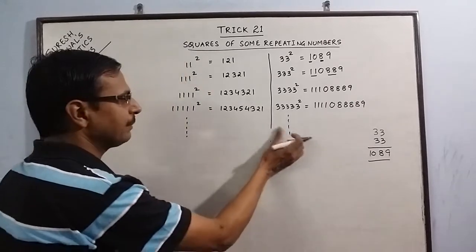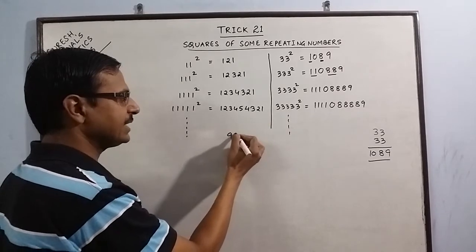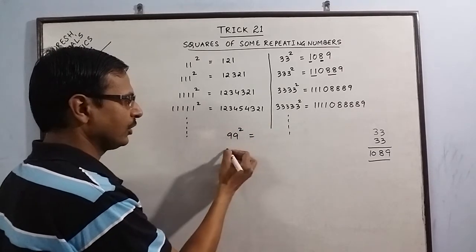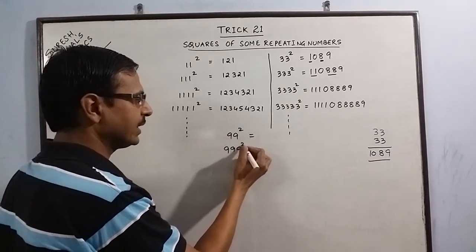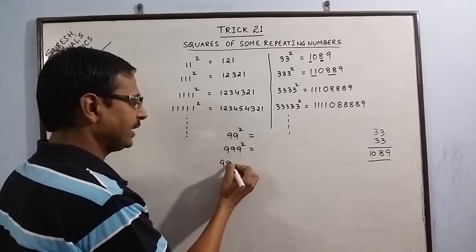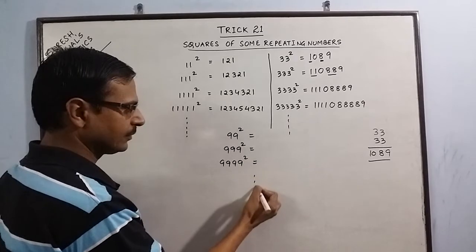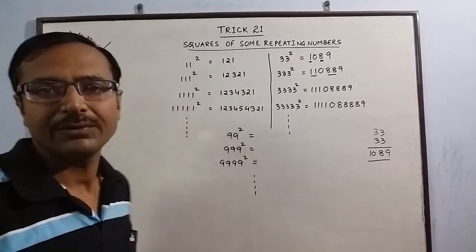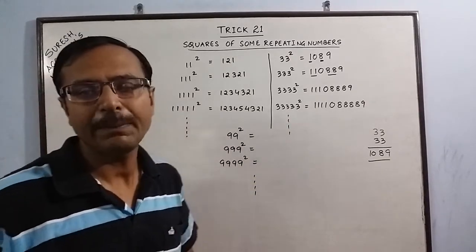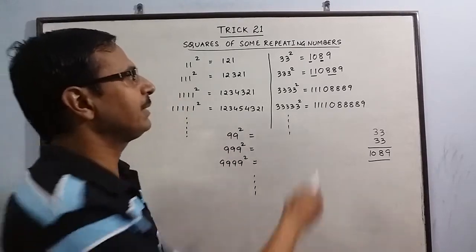Say we have the pattern of 9s: 99 square, followed by 999 square, 9999 square and so on. For finding this pattern, we apply the same rule as we have applied in 3s.